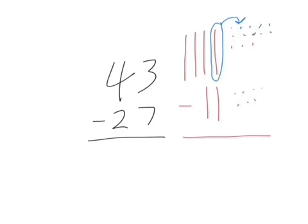So now we have 13 ones minus 7 ones, which gives us a difference of 6.